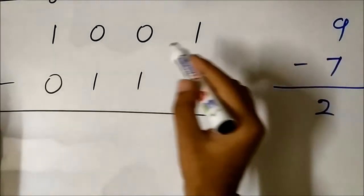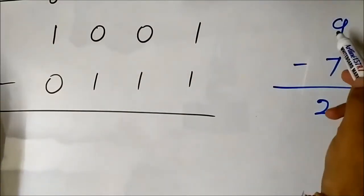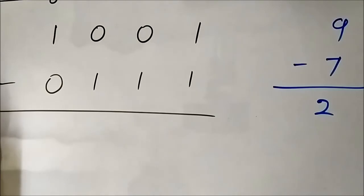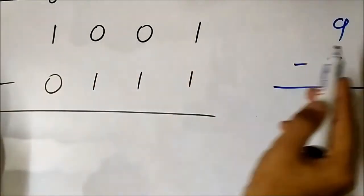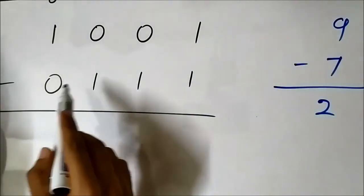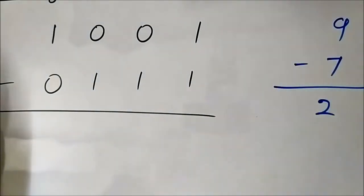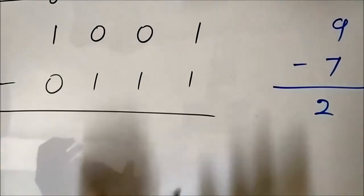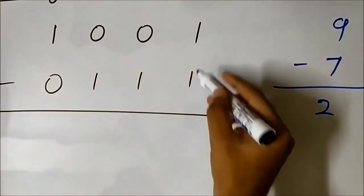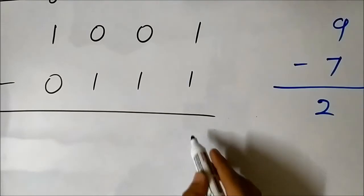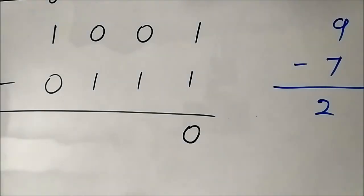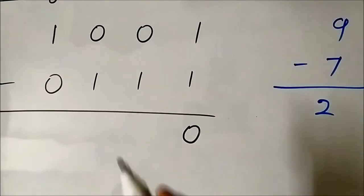Here is another example on binary subtraction. We are going to subtract 7 from 9: 9 minus 7, and the result in decimal is 2. In binary form, 9 is 1001 and 7 is 0111. Let us perform the subtraction starting from the LSB: 1 minus 1 is 0 — no problem according to the rule.